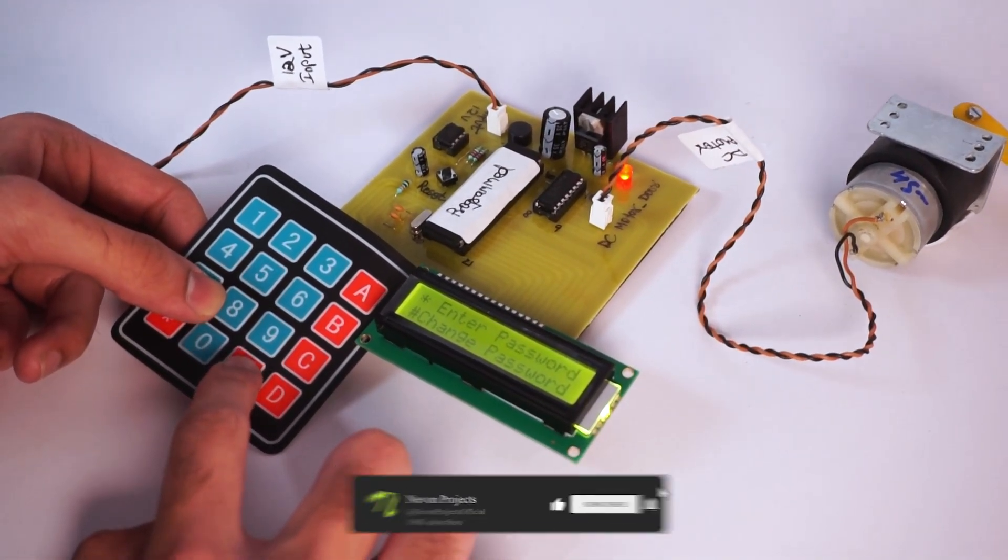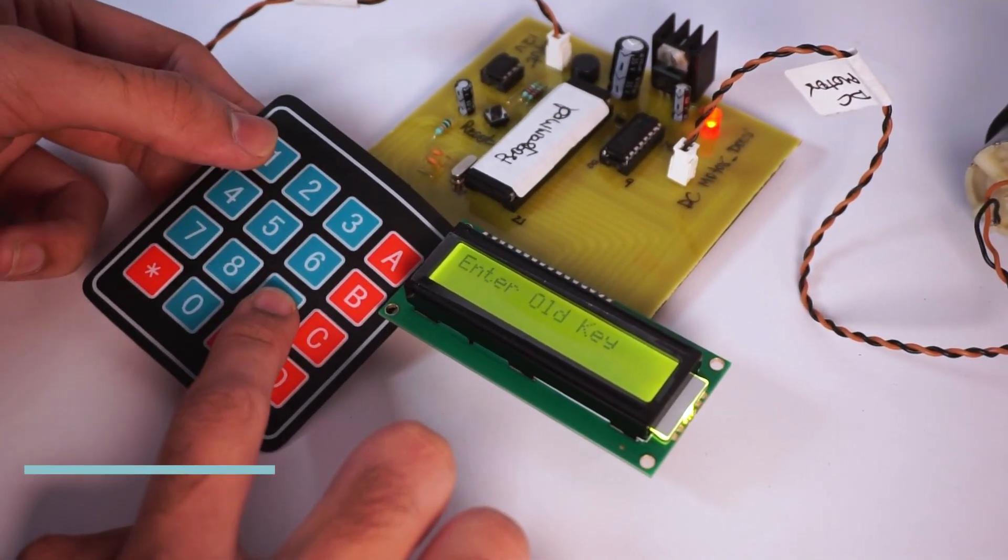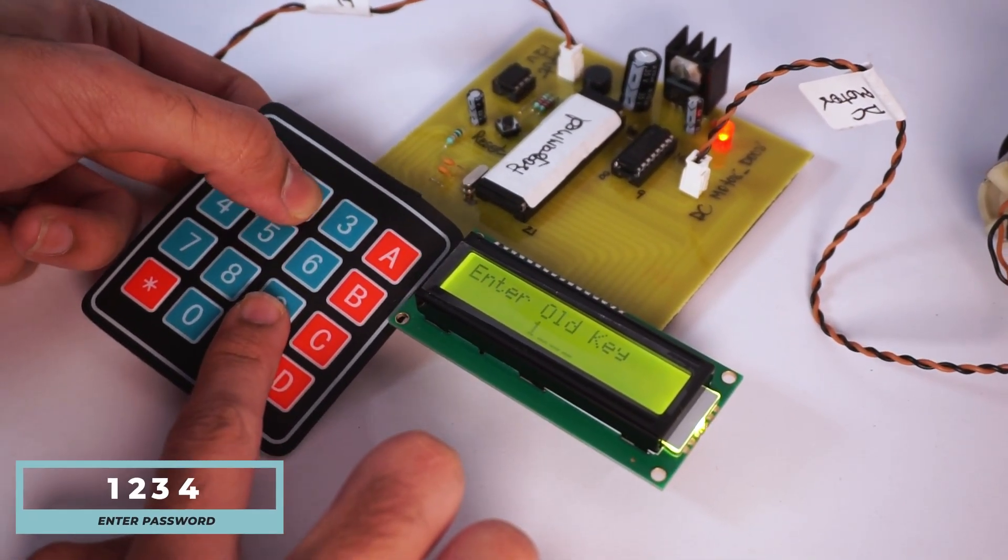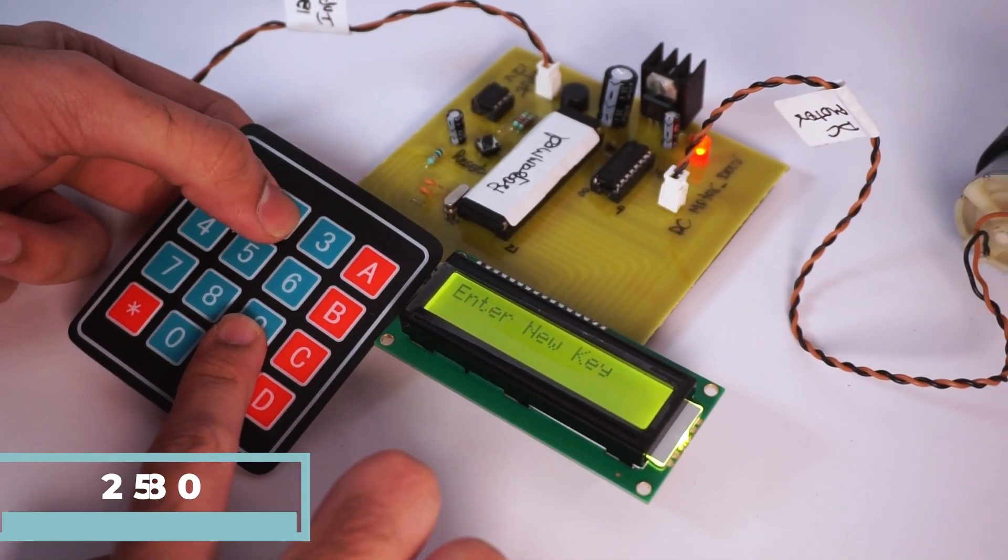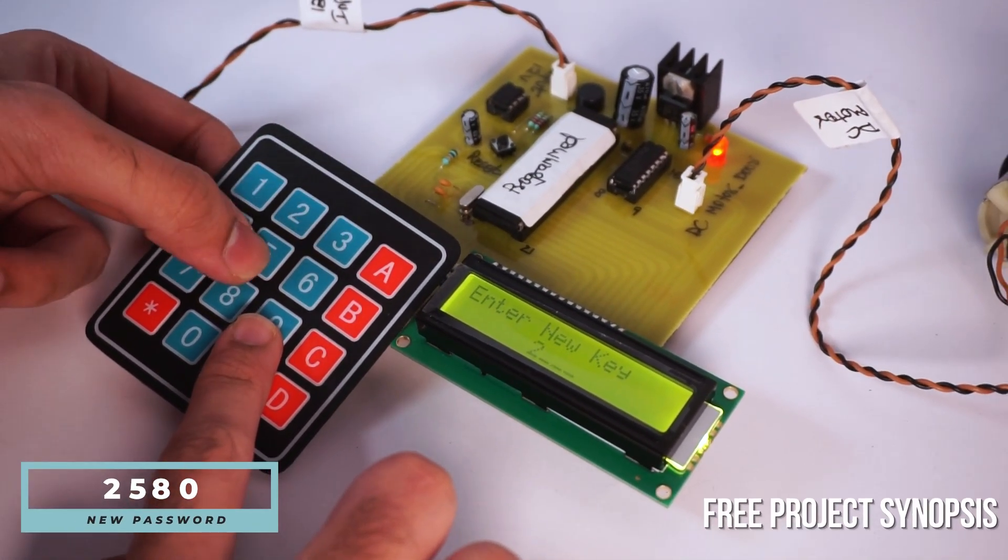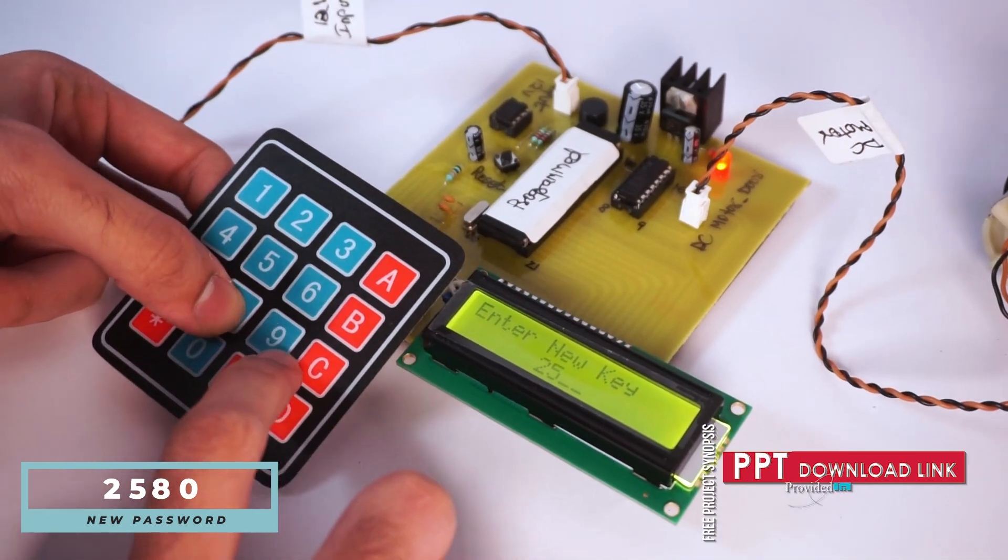Here we have to first enter the hash key, we have to enter the previous key which is 1234, and after that we can set a new password, anything of your choice. Let's set 2580 as a new password.